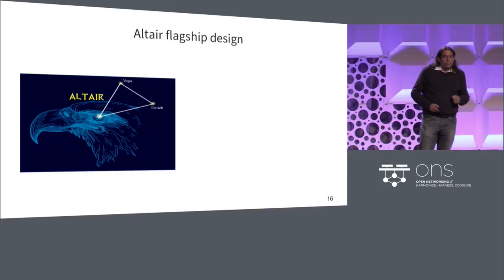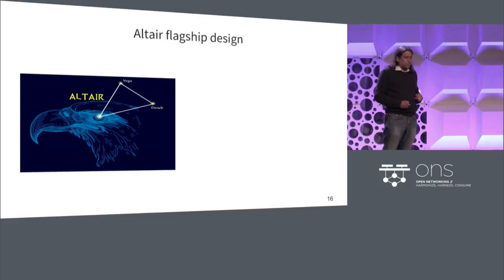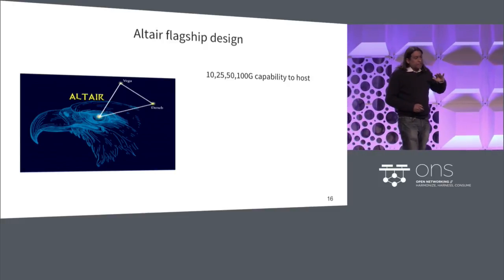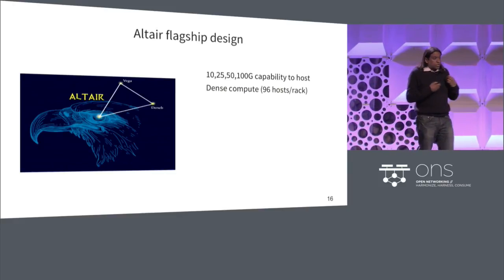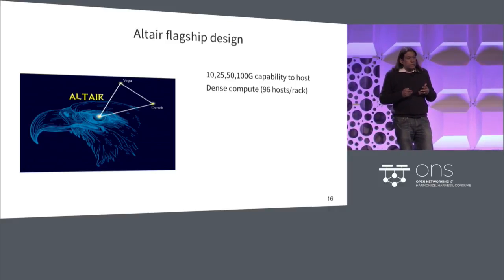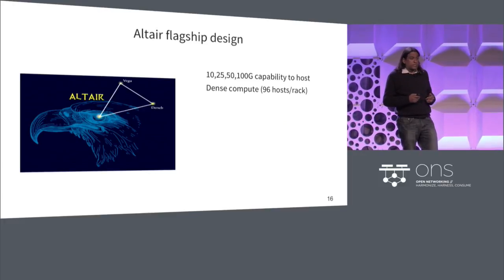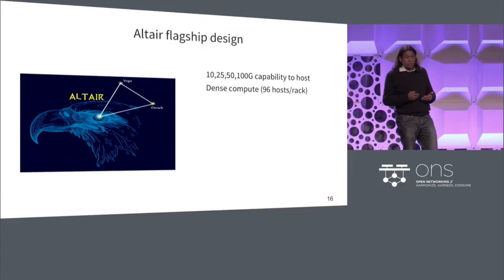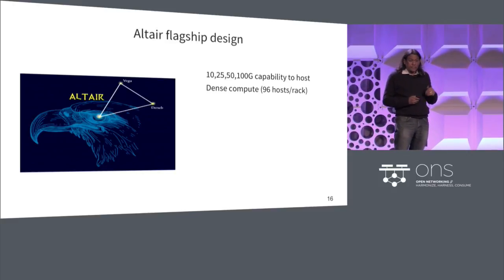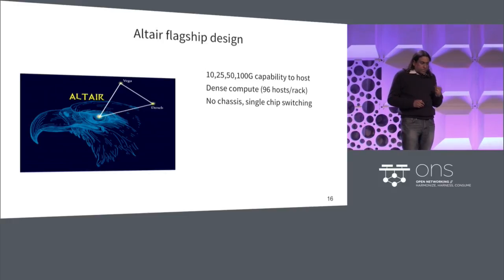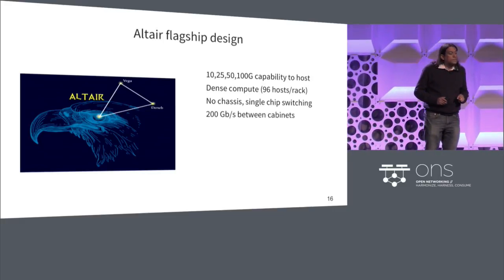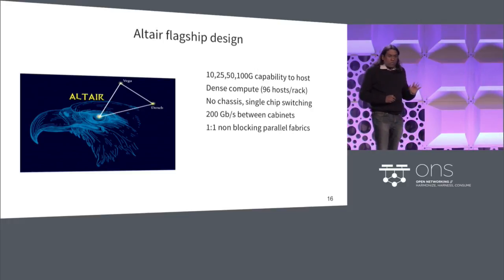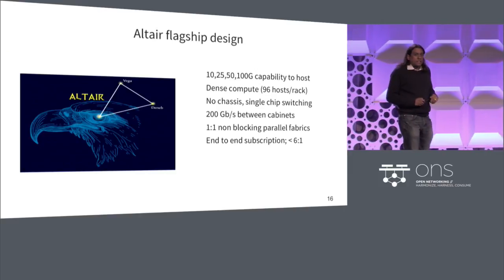Out of that, we created our flagship design called Altair. We future-proofed it from 10 to 100 gig capability to the host. We do dense compute — we pack up to 96 hosts in a rack because we buy wholesale data center space. We decided to move to single-chip switching — no chassis in the network. We want to support 200 gigs between cabinets, non-blocking parallel fabric, and we're trying to get subscription down to less than 60 to 1.